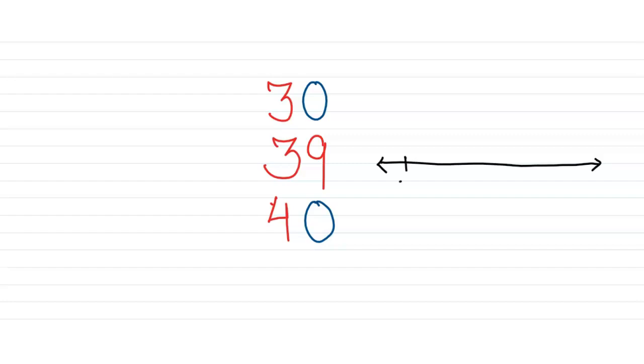Let's look at the number line. Here goes the number line. Here goes 30. Here goes 40. And what's the middle number? It is 35. 35 goes halfway.